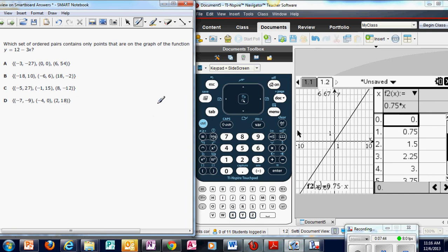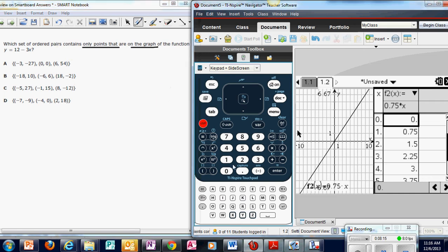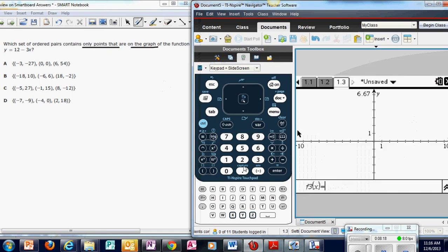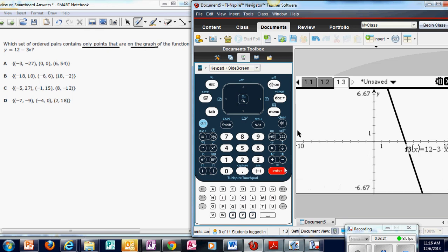Which set of ordered pairs contains only points that are on the graph of the function? Points on the graph. So you are given an equation. It's not in slope intercept form. It's isolated so you can enter it in the calculator, but technically it's not in slope intercept form. If I have an equation and I want to match it up with points, these different relations contain points, I have to graph the equation and then pull up a table. But there's something special we're going to do with the table. So first, let's go ahead and graph it. So I'm going to insert a new page, a graph, and enter that equation exactly how it is. 12 minus 3X. Now I want to pull up a table. So that's control T.